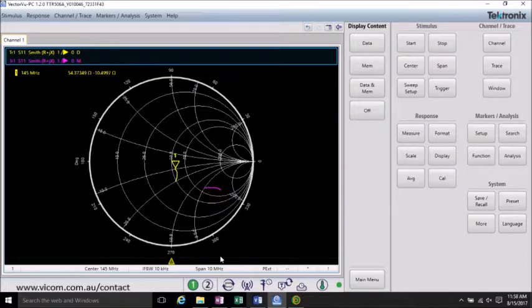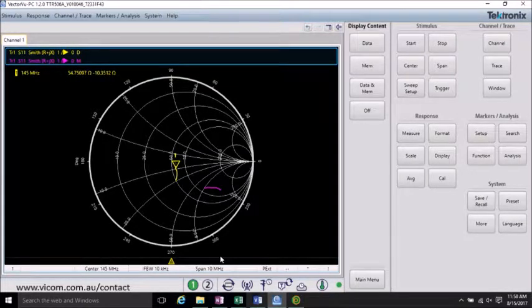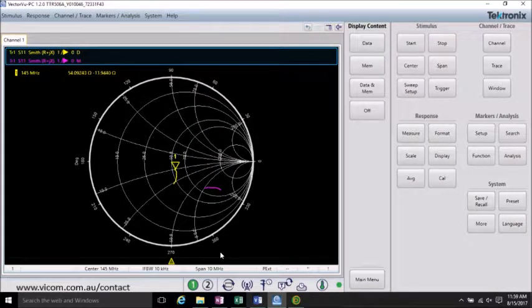Continuing on, now I have the series inductor added to the matching network. And you can see our match point or our impedance has moved closer to the center of the Smith chart. It's not perfectly at the center. And so, to improve this, I'd probably repeat this process again to get the components exactly where I need them. But it's pretty close.